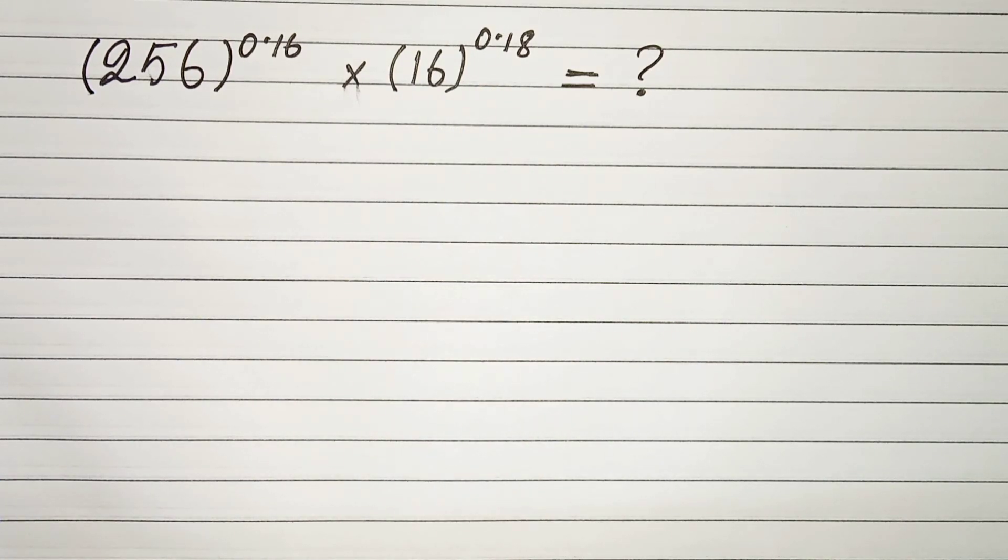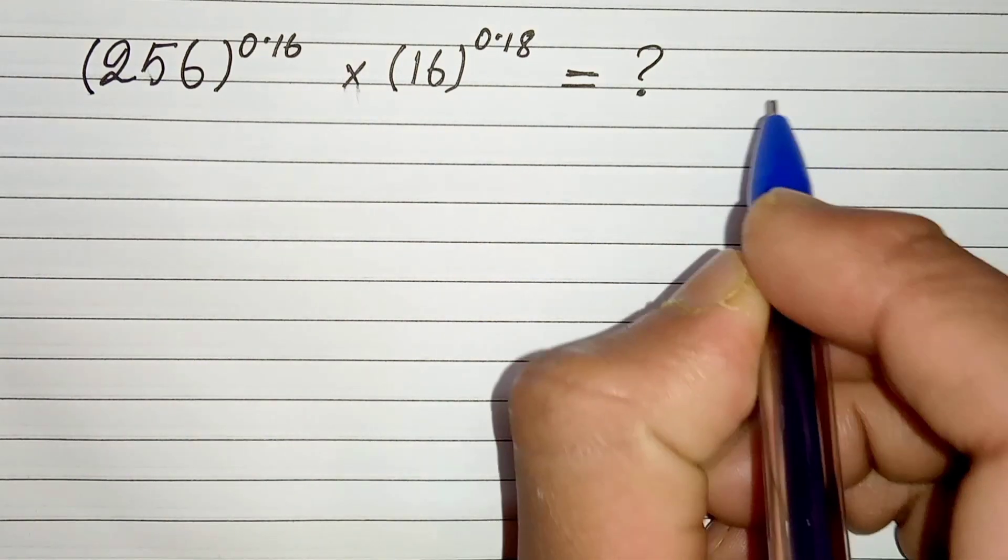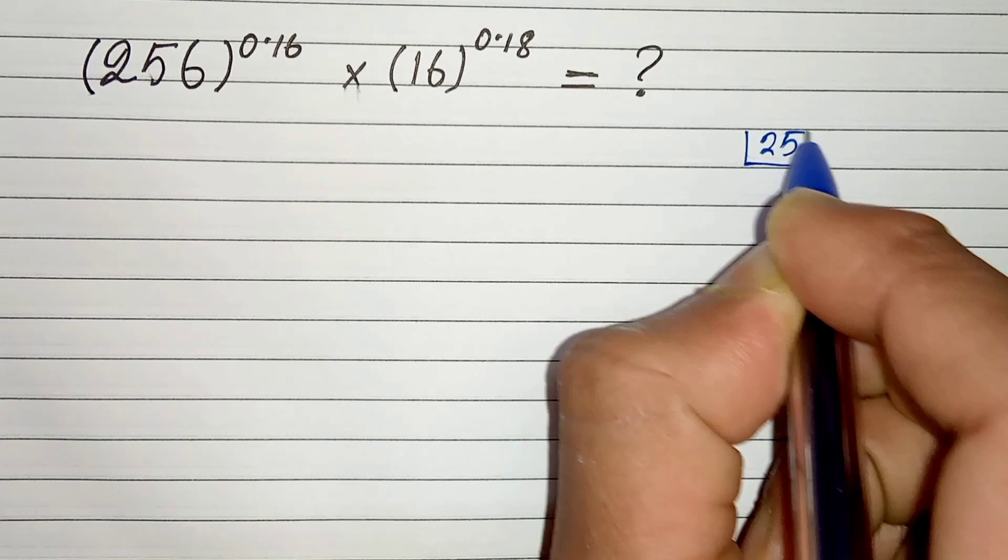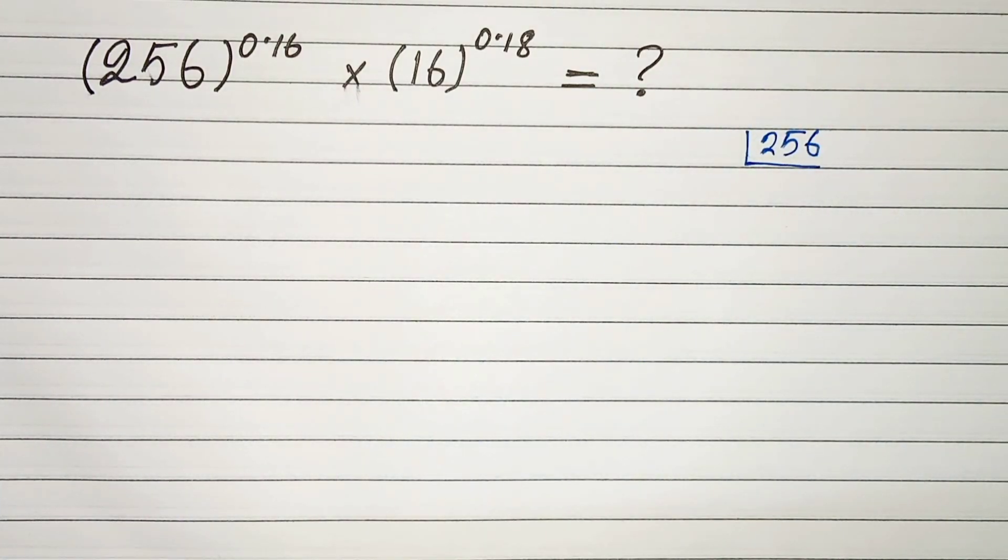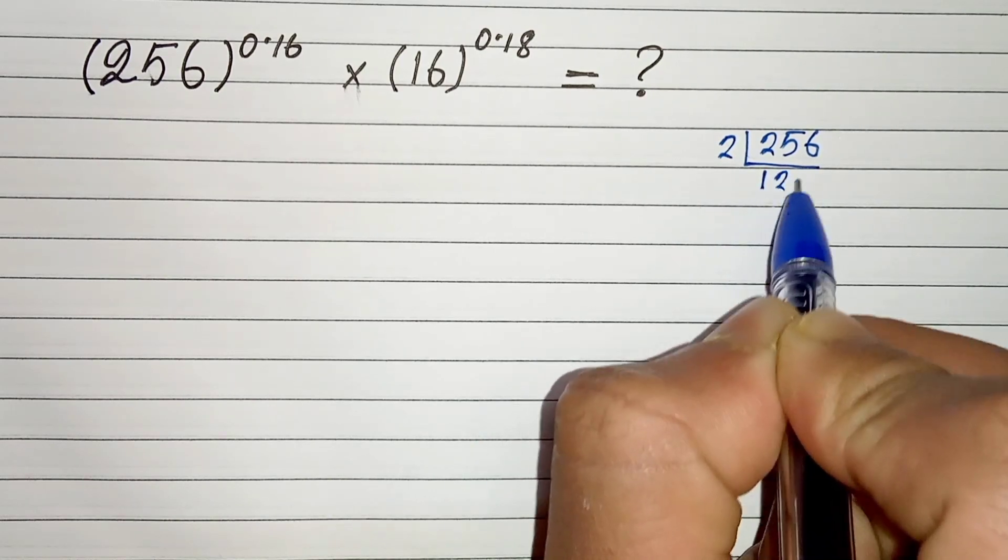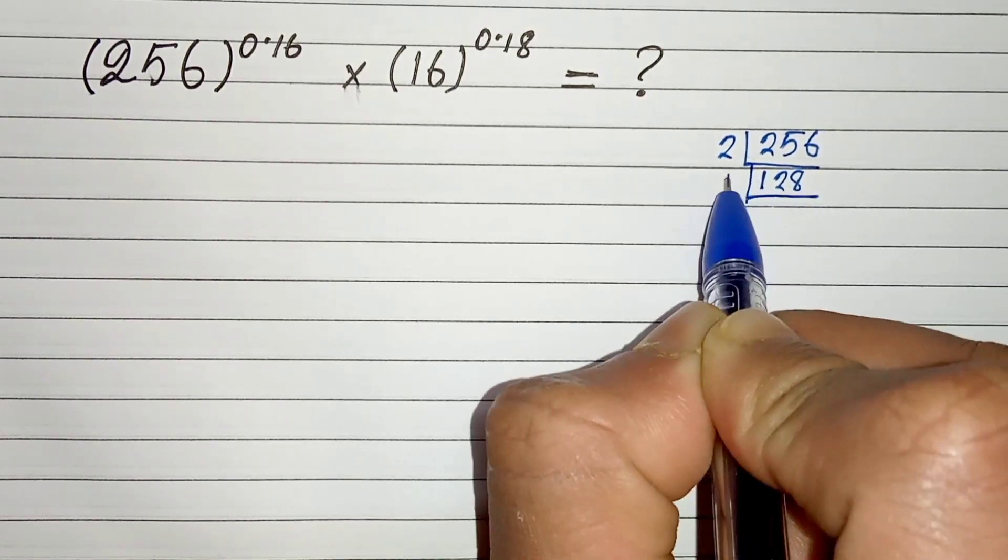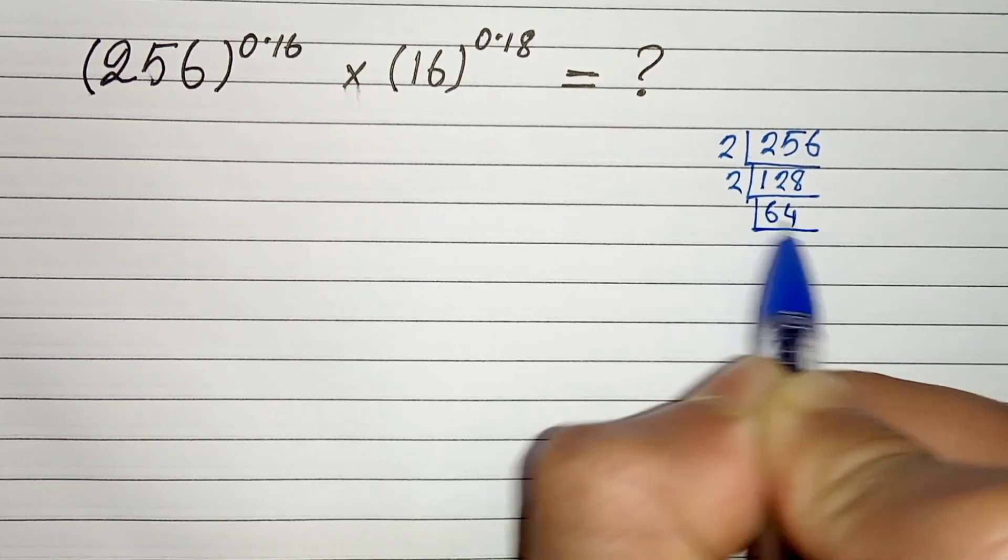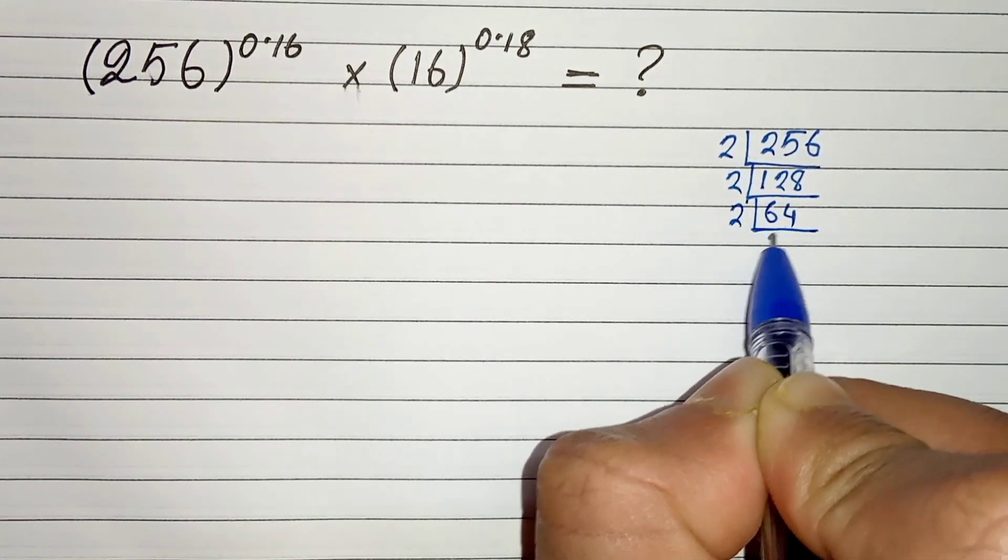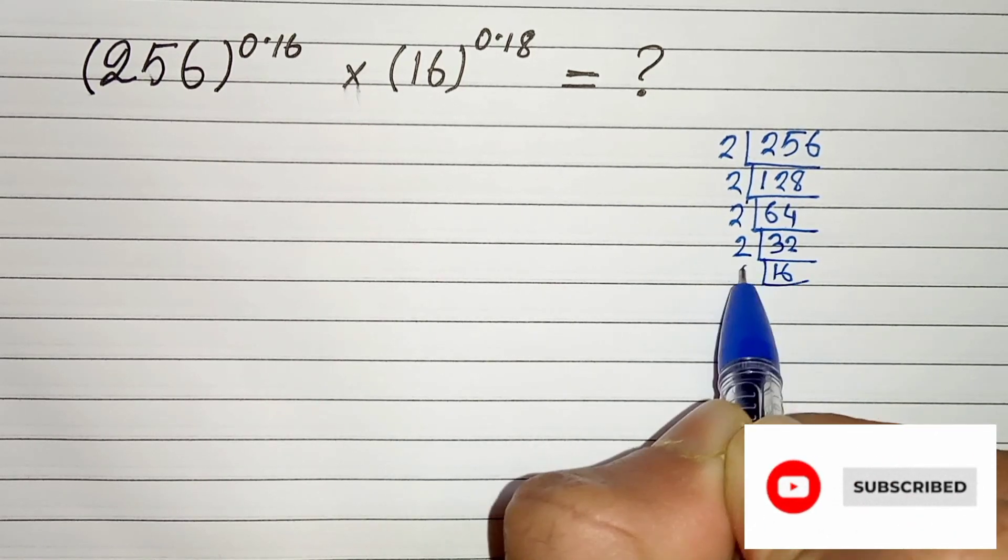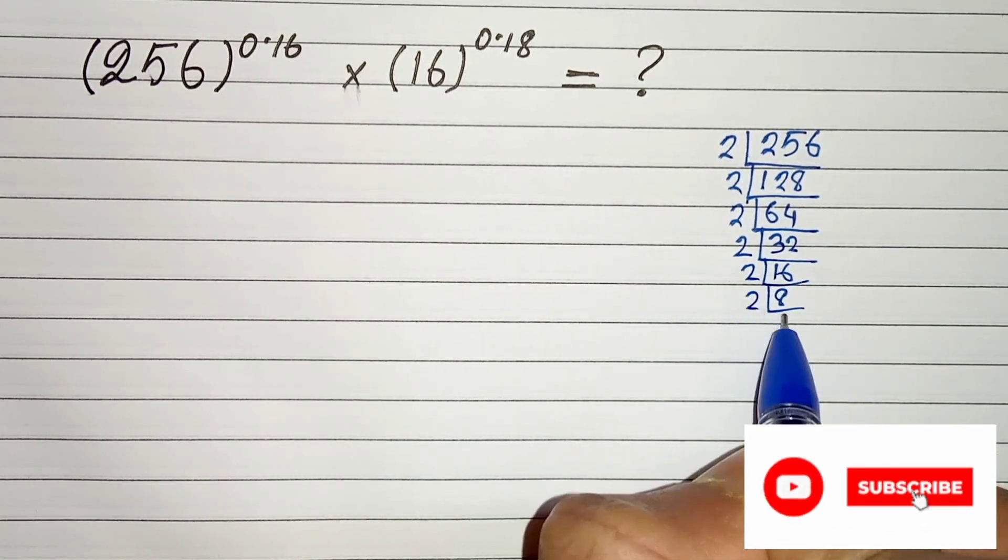First of all, let's find the factors of 256. Let's divide 256 by 2, we will get 128, which is divided by 2 we will get 64, 64 divided by 2 is 32, and 16, then 8, then 4, and 2.